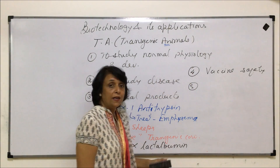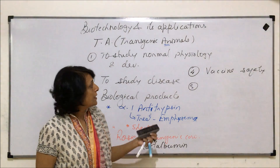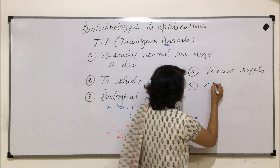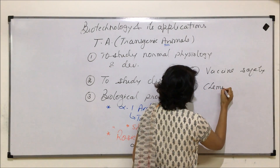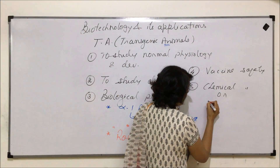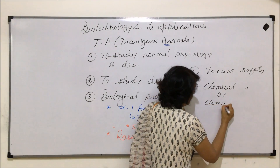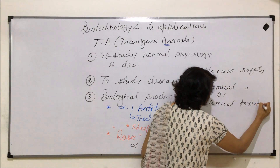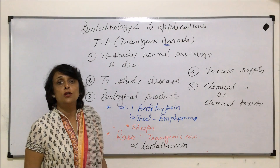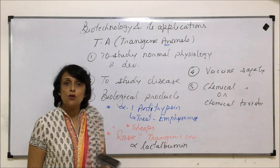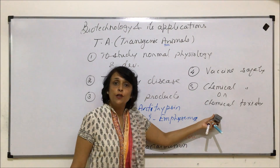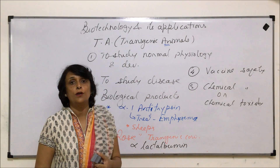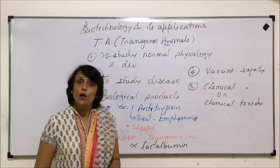Another application where we want transgenic animals is to test for chemicals — that is, chemical safety or chemical toxicity. Whether a particular chemical is toxic to human beings or not is also first tested on animals, and then that chemical or drug can be used for humans.